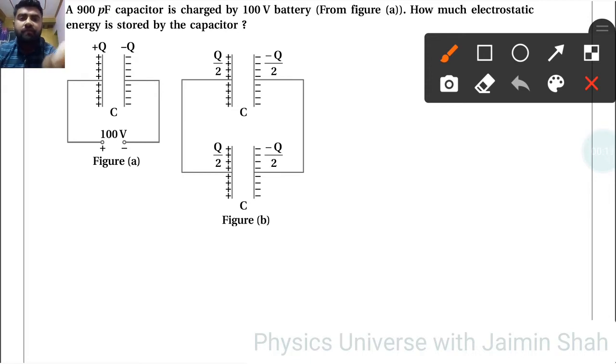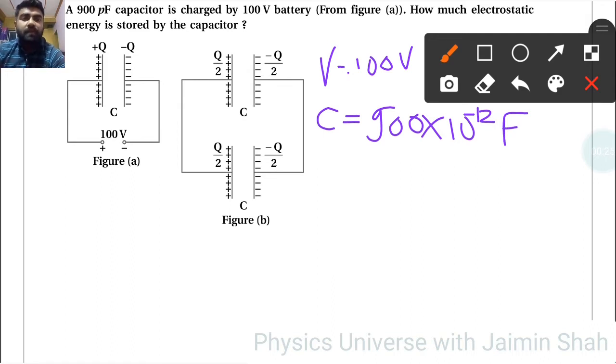The voltage is 100 volts and the capacitance is 900 into 10 raise to minus 12 faraday. The energy stored formula is half CV square.